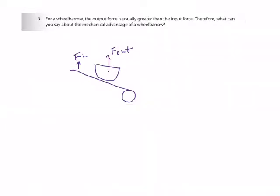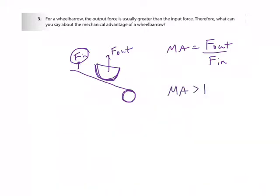Number three: for a wheelbarrow, the output force is usually greater than the input force. Therefore, what can you say about its mechanical advantage? You typically lift on one end — that's your input force — and the load sits in the middle as the output force, with the wheel acting as the fulcrum. The mechanical advantage formula is output force divided by input force. If output force is always bigger than input force, the mechanical advantage is greater than one.